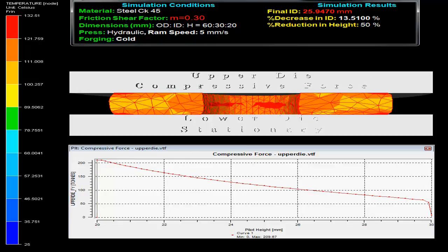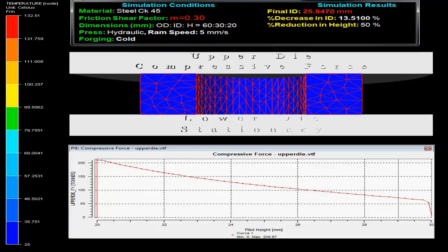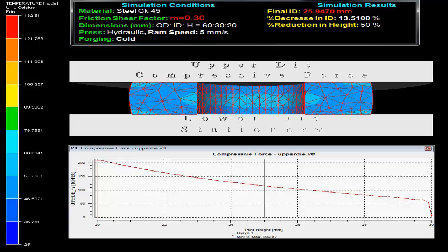The press uses hydraulic press with RAM speed 5 mm per second. Forging is done cold.